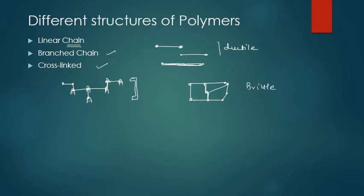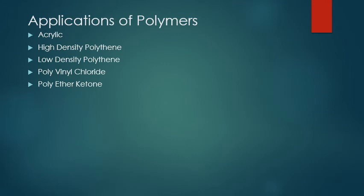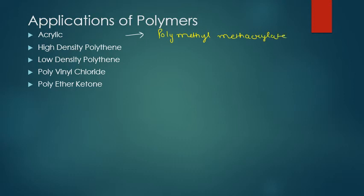Now let's move on to the applications of polymers. We have different types — acrylic, high-density polythene (HDPE), low-density polythene, polyvinyl chloride, and polyether ketone. An example of acrylic polymers is polymethyl methacrylate (PMMA).